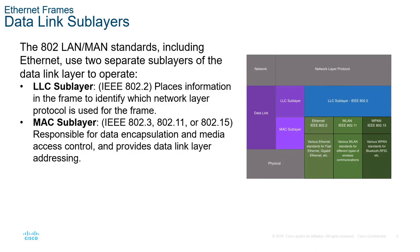The LLC sublayer 802.2 places information in the frame to identify which network layer protocol is being used by the frame. Just like Layer 2 can use different network technologies, Layer 3 is the same way — we assume IP-based but it doesn't have to be. The MAC sublayer is 802.3 for wired connections, 802.11 for wireless, and 802.15 for wireless personal area networks. The LLC layer allows higher-layer identification.